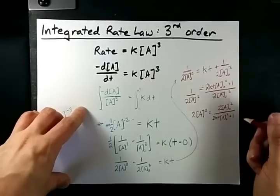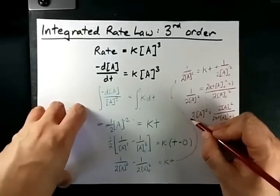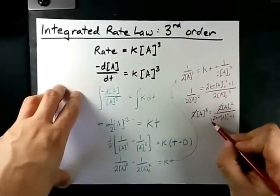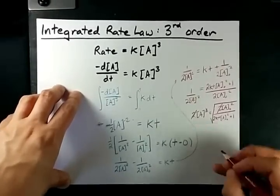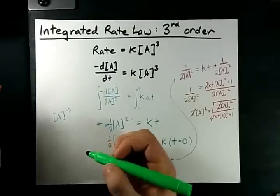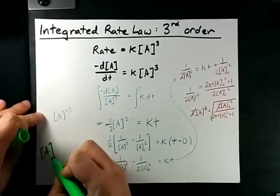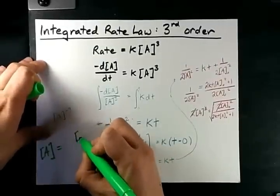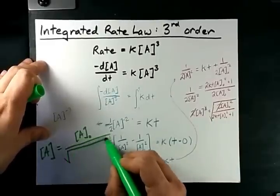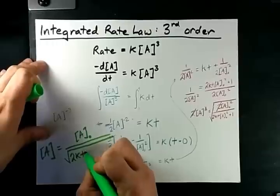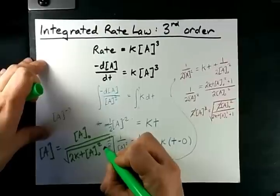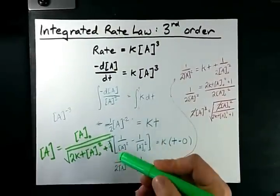Can you see why they don't usually do third order rate laws yet? I'm going to cancel that 2 with that 2, and then to get rid of this squared, I simply square root this side. So what I've derived here is that the integrated rate law for a third order reaction is the concentration at any time t is the initial concentration divided by the square root of 2kt[A]₀ squared, that's the initial concentration squared, plus 1. All right, there you go. It's in green for you.